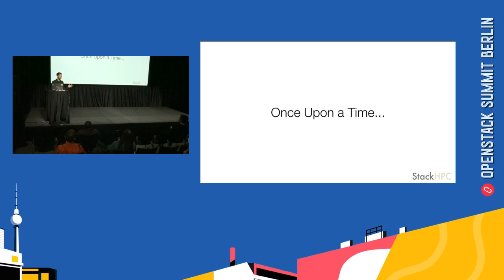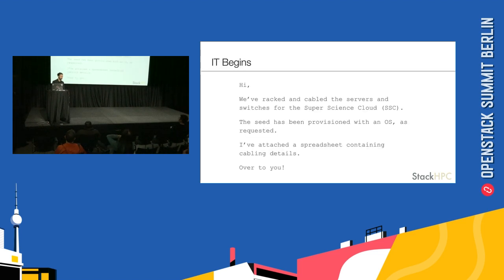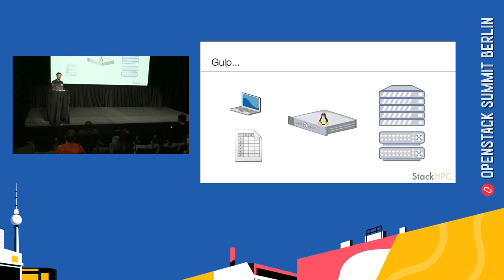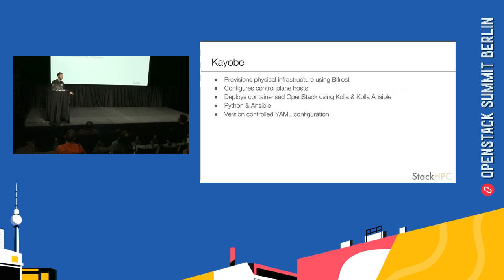But try to scrub that image from your mind for a while and imagine you are a cloud deployer and you've been tasked to build the super science cloud. You're quite happily doing your work one day and you get this email. The data center operator has racked and cabled your servers, your switches, everything you need. They've installed a Linux OS on one of them and given you a spreadsheet. What do we do now? This doesn't look anything like the cloud that we've got in our architecture documents. So this is where KOB comes in.